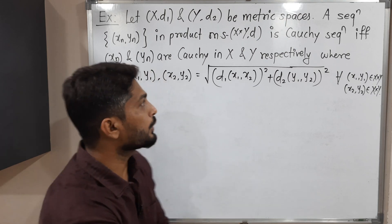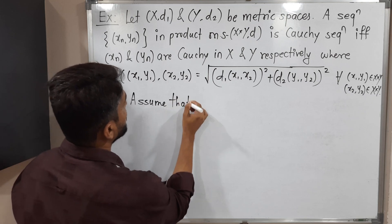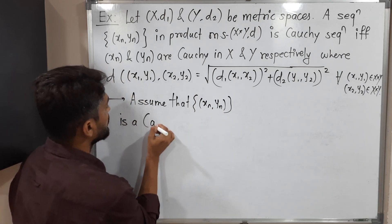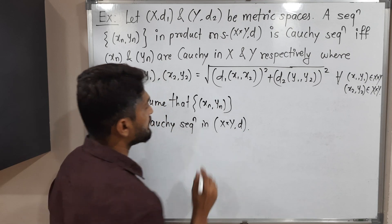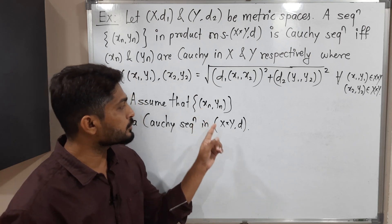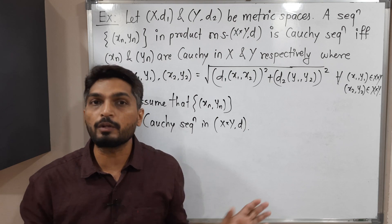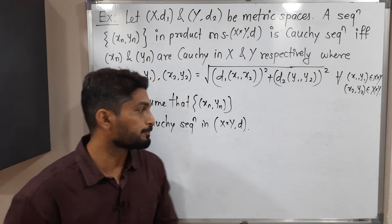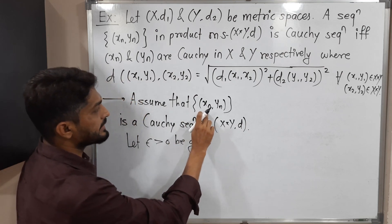So let us start with one part. I will assume that (xn, yn) is a Cauchy sequence in the product metric space X cross Y with metric d. My target is to prove that xn is Cauchy in X and yn is Cauchy in Y. We are familiar with the definition of Cauchy sequence — the same definition I will use everywhere in this proof.